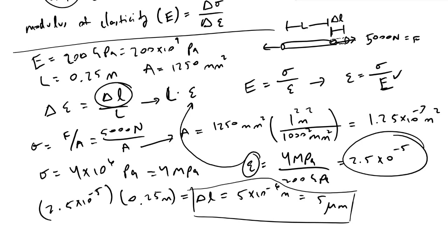Intuitively, what this tells us is that if I applied a force of 5,000 newtons onto this rod, pulling it in opposite directions, we're expecting to see the rod become 5 micrometers longer. We are talking about a very small elongation, and that is going to be it for this video. I hope you guys find this useful, and thanks for watching.